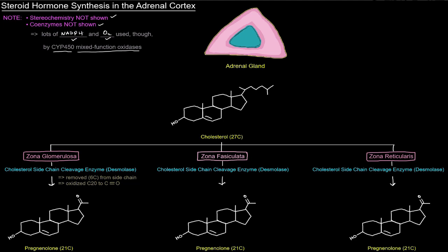I've got a little slice of the adrenal gland shown here, and the adrenal gland is actually two glands. There's the adrenal medulla shown here in the middle, which we're not going to really talk too much about in this video. The adrenal medulla is associated with the catecholamines like norepinephrine and epinephrine. The rest, shown in these different shades of pink, is the adrenal cortex, and that's what we're going to be talking about. Let's zoom in on the adrenal cortex and its different layers.